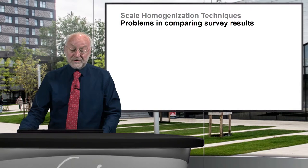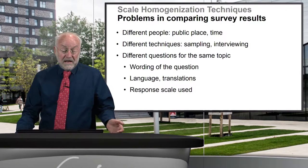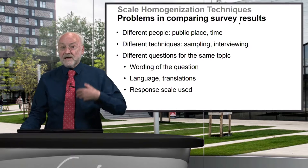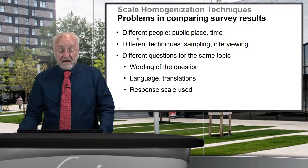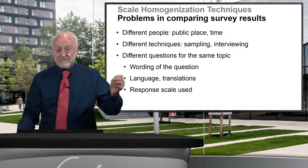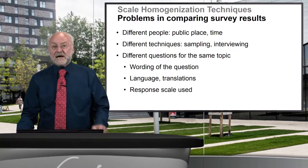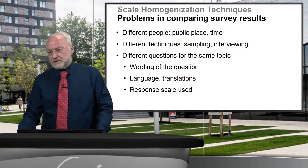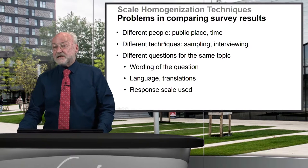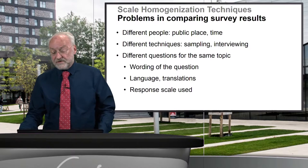What exactly is the problem? The problem, when you compare results of surveys — large-scale questionnaire studies — is that you deal with different people: some living in the US, some in Europe, some in Asia, also at different times. The first studies on happiness were done in the 1950s. Also different are the techniques used: different sampling techniques, but also different interview techniques.